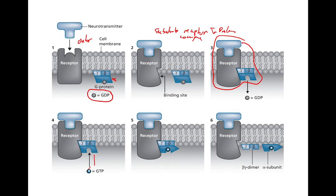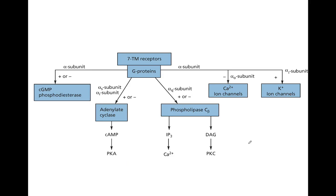The next step in the cascade depends on which type of G proteins are present and the specific type of alpha subunits involved. There are at least 20 known alpha subunits, each causing different effects. Alpha S and alpha I subunits are involved in activating or inhibiting adenylate cyclase, which leads to the release of cyclic AMP and activation of protein kinase A. The alpha O subunit is involved in regulating calcium ion channels, and alpha I is involved in potassium channels.